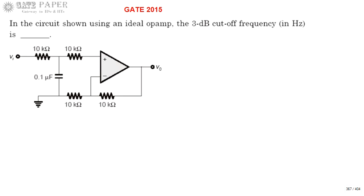Hello, we are discussing GATE 2015 ECE paper. This question is related to analog circuits. Look at the circuit diagram with ideal op-amp, and we need to find the 3 dB cutoff frequency of the circuit.